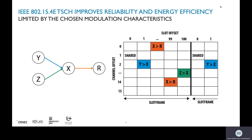This time-slotted schedule and channel hopping make the MAC layer very energy efficient, because when you don't send you can sleep. It is also very reliable, because you avoid external interference and multipath fading effects. However, TSCH is still limited by the chosen modulation of the network, because all nodes perform all their transmissions with the same modulation. If that modulation doesn't fit your network requirements — in terms of transmission range, processing time, energy consumption, or data rates — your network performance will not be good enough.